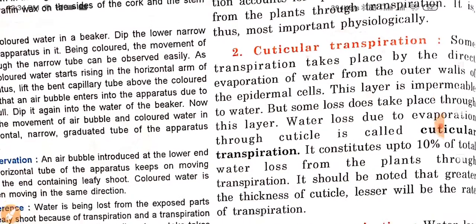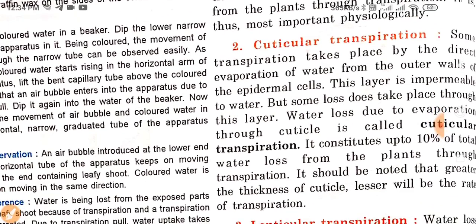The second type of transpiration is cuticular transpiration. Some transpiration takes place by the direct evaporation of water from the outer epidermal cells. This layer is impermeable to water, but some loss does take place through it. Water loss due to evaporation through the cuticle is called cuticular transpiration, and it constitutes up to 10% of total water loss from plants through transpiration.